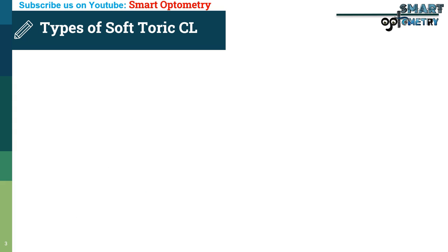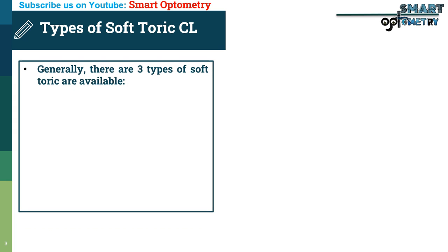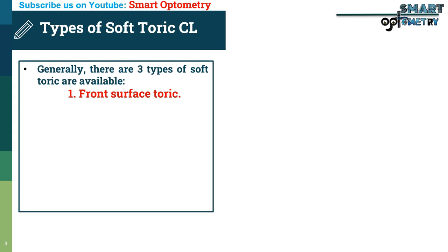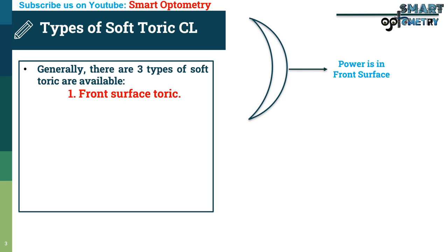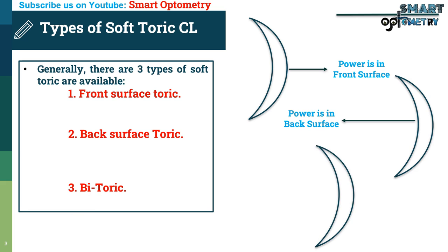Types of soft toric contact lenses. Generally, there are 3 types of soft toric lenses available: 1. Front surface toric, 2. Back surface toric, 3. Bitoric.